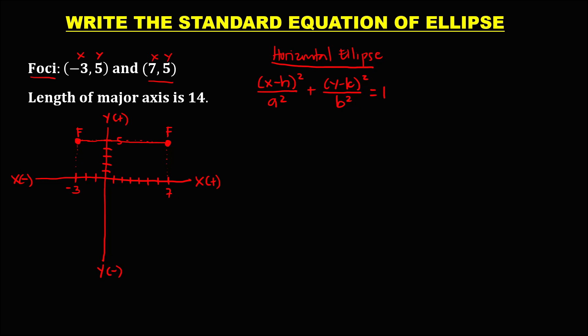To write the standard equation for this ellipse, we need four values: h, k, a, and b. Since h and k come from the center of the ellipse, but there is no given center in this problem, we need to locate the center first. The center is the midpoint of the foci.